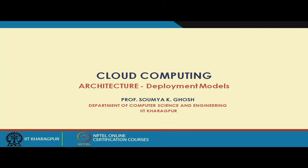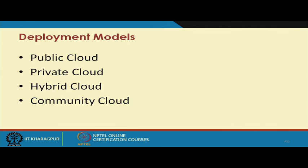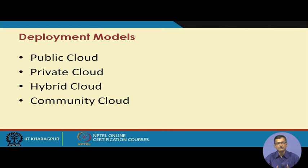Welcome to our next lecture on cloud computing. Today we will continue our discussion on cloud architecture, specifically looking at aspects of cloud architecture such as virtualization. Recalling earlier lectures, we discussed different types of service models. We also have different types of deployment models in cloud, namely public, private, hybrid, and community cloud, and all sorts of services can be hosted in different types of deployment models.